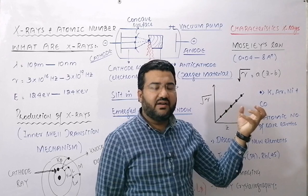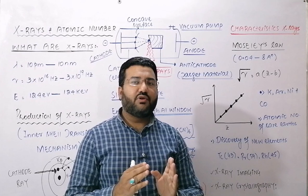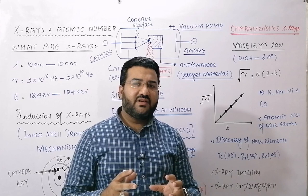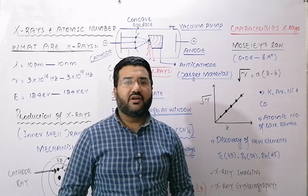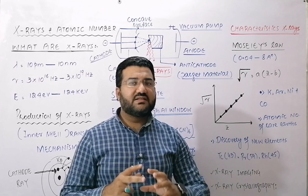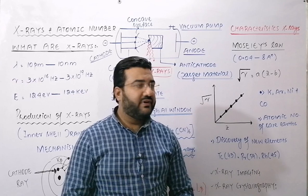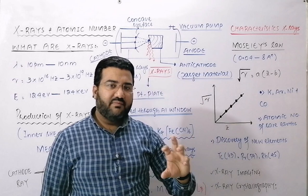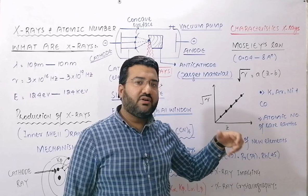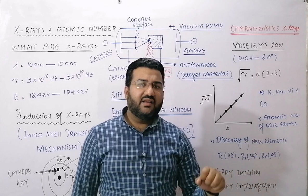Moseley's law is very important because after it, atomic number became the main criterion to study the properties of elements. Before Moseley's law, atomic number was just considered a number for positioning elements in the periodic table. After Moseley's law, it was confirmed that atomic number decides the physical and chemical properties of elements, and Mendeleev's periodic table was improved — Moseley correctly arranged potassium, argon, nickel, and cobalt, which had been wrongly arranged by Mendeleev.